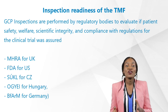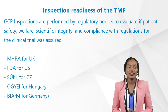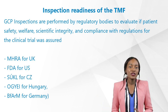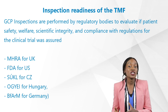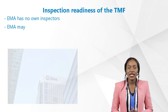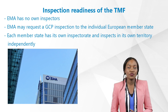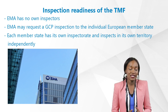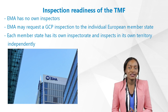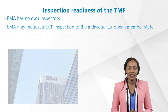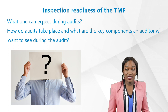GCP inspections, unlike audits, are performed by regulatory bodies — such as the examples listed here — to evaluate whether patient safety, welfare, scientific integrity, and compliance with regulations for the clinical trial were assured. EMA has no own inspectors; EMA may request or trigger a GCP inspection through individual European member states, whereas each member state has its own inspectorate and inspectors operating independently in its own territory.